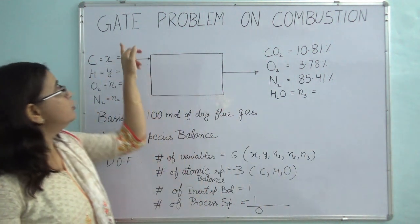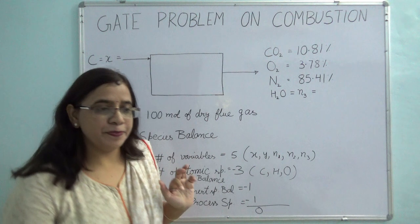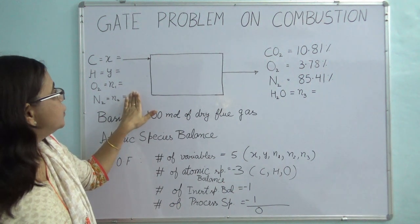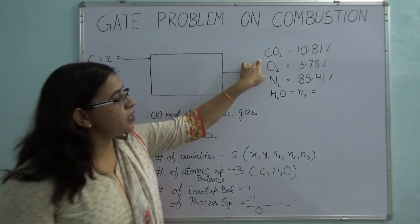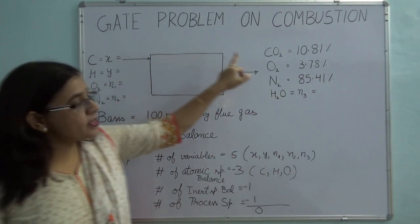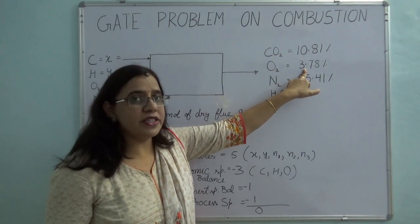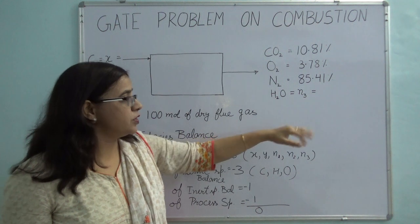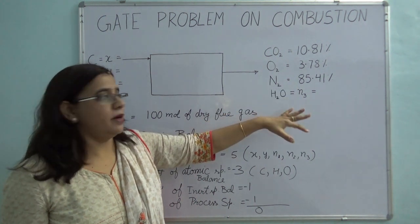This was a problem which appeared in GATE 1996. The problem statement is given in the description box for your convenience. There is an unknown hydrocarbon which is burnt completely so that you get only carbon dioxide and no carbon monoxide. The ORSET analysis gives you that carbon dioxide is 10.81%, oxygen is 3.78%, and nitrogen is 85.41% in the flue gases. Since this is an ORSET analysis, it is on a dry basis, so we don't know how much water is coming out.